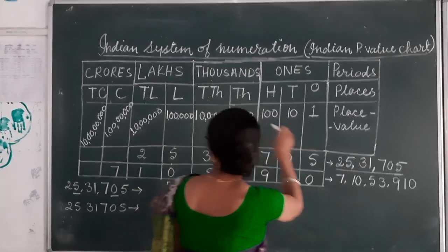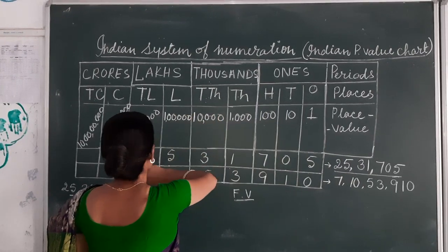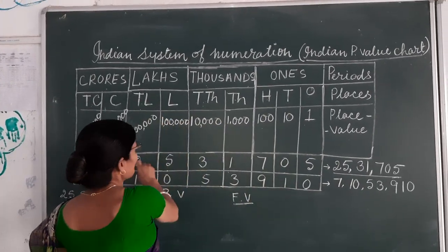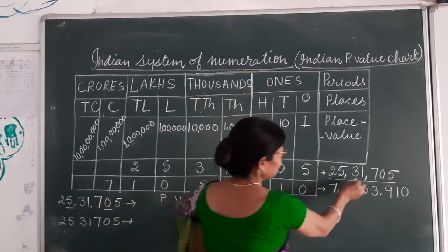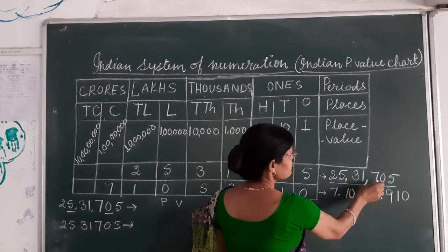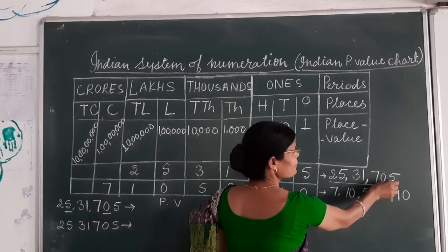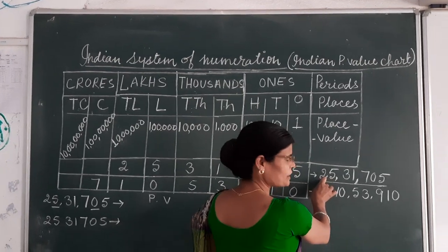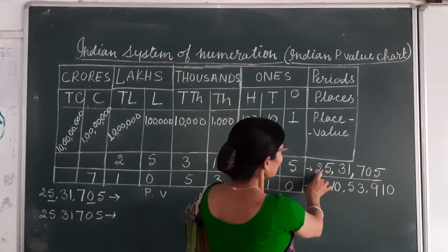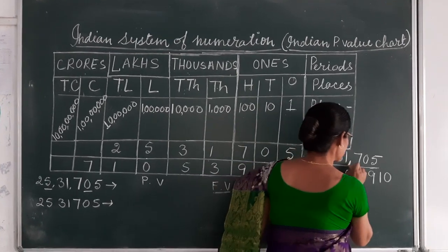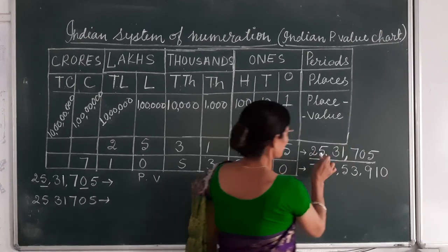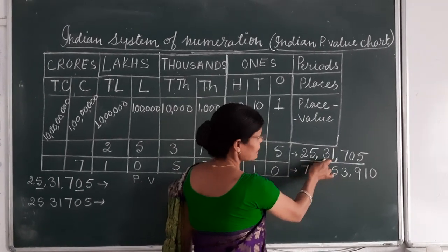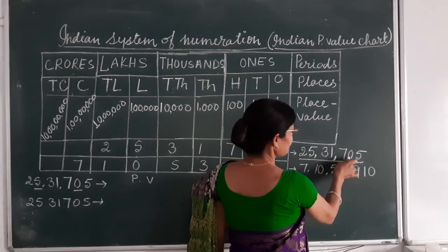And we will get the number like this: 25 Lakhs, 31,705. According to the Indian system of numeration, we will read and write this number as 25 Lakhs, 31,705.